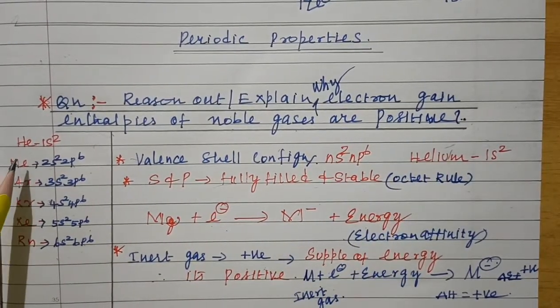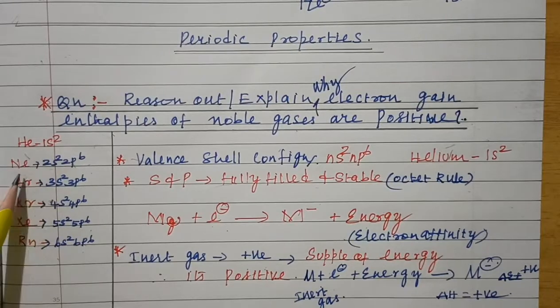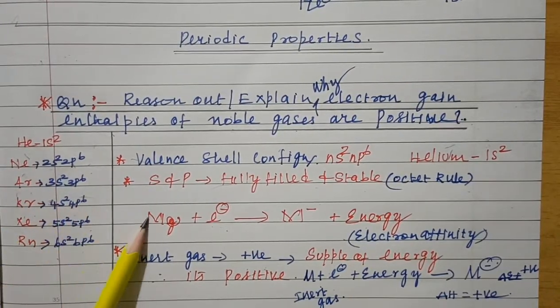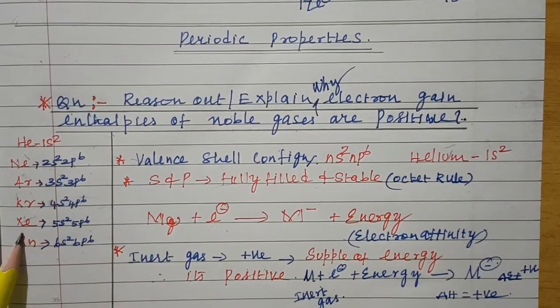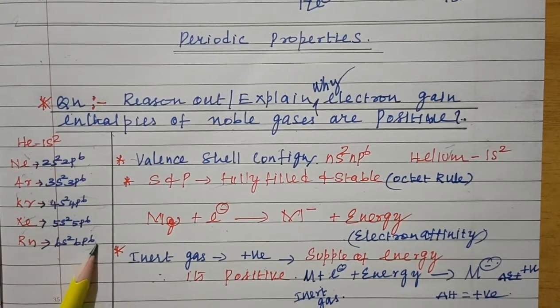Let's see the electronic configuration of noble gases. Helium 1s², neon 2s²2p⁶, argon 3s²3p⁶, krypton 4s²4p⁶, xenon 5s²5p⁶, radon 6s²6p⁶.